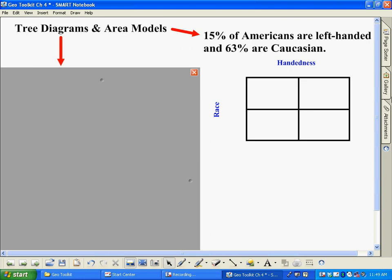So I went on the internet and found a couple of statistics here. First of all, did you know that 15% of Americans are left-handed? And also 63% are Caucasian.